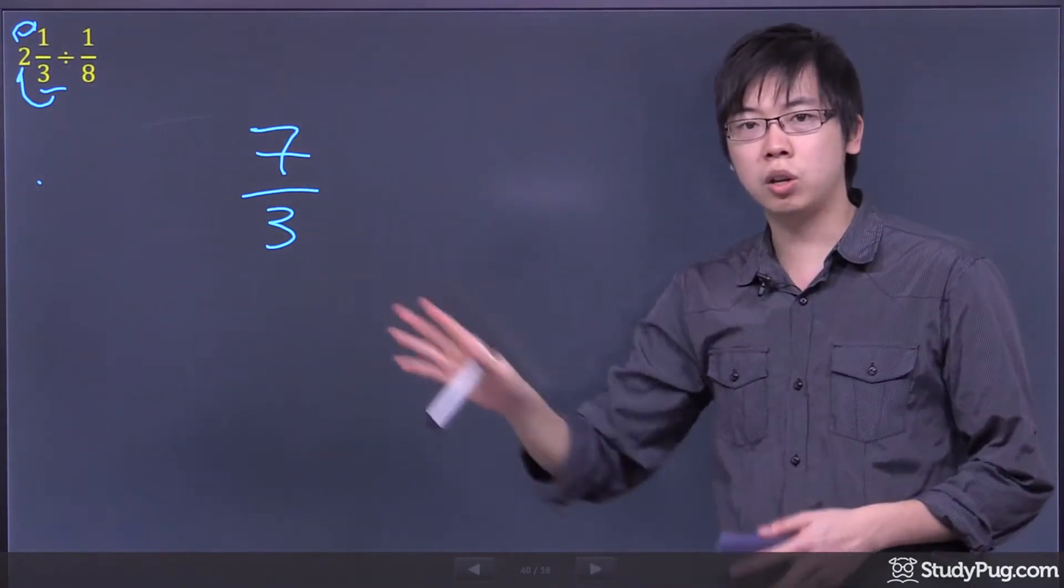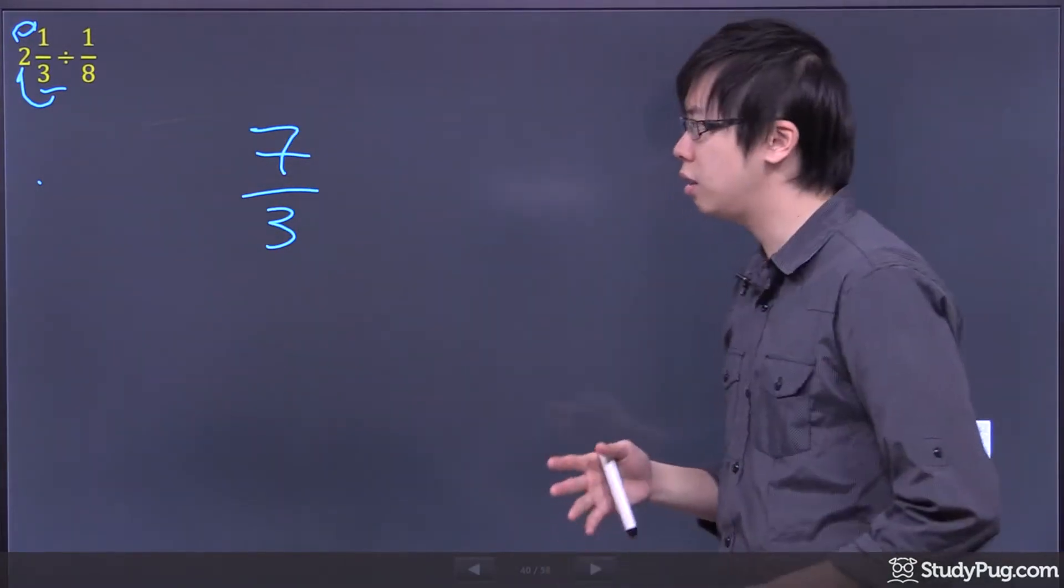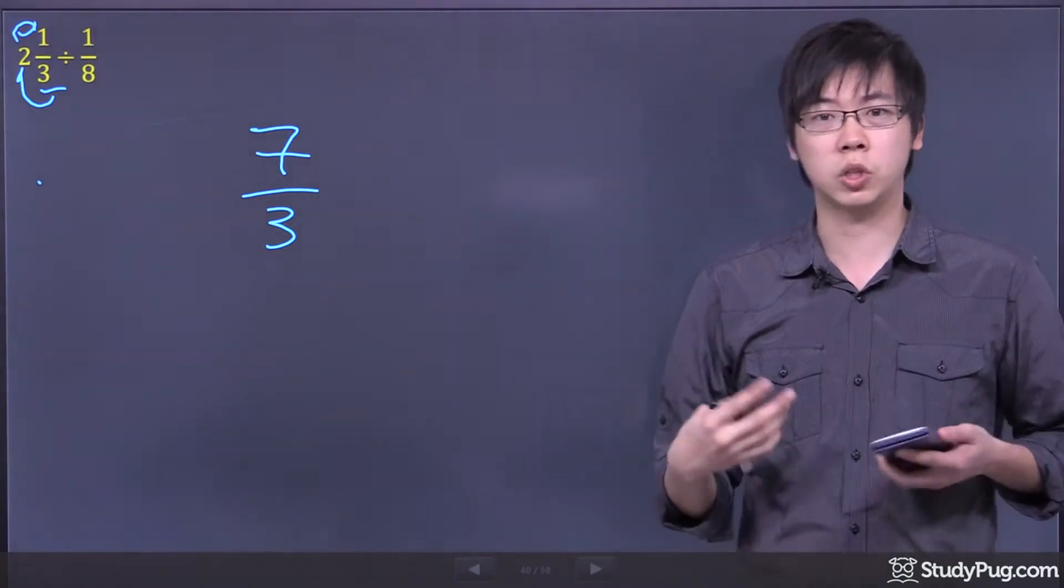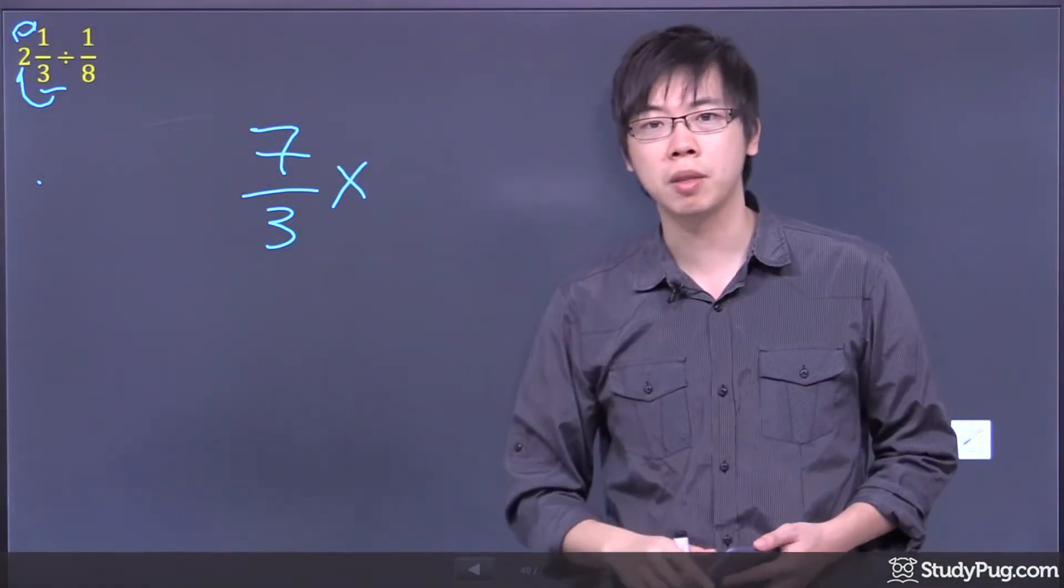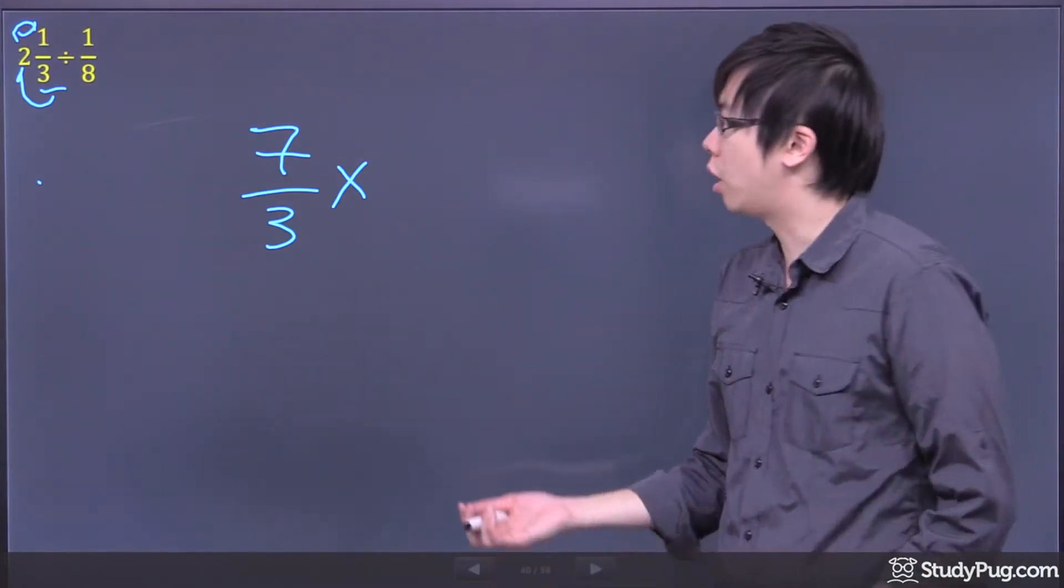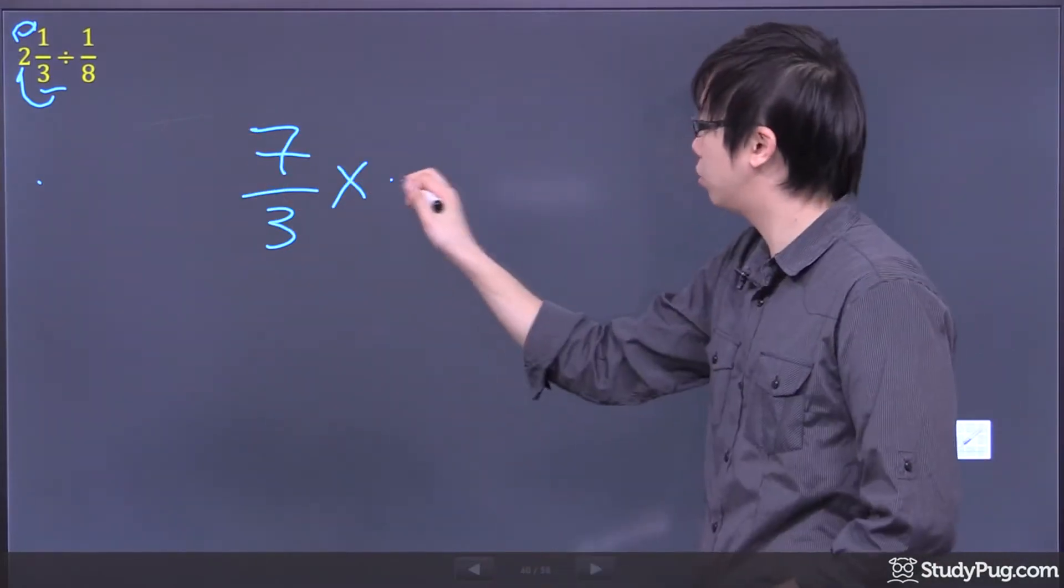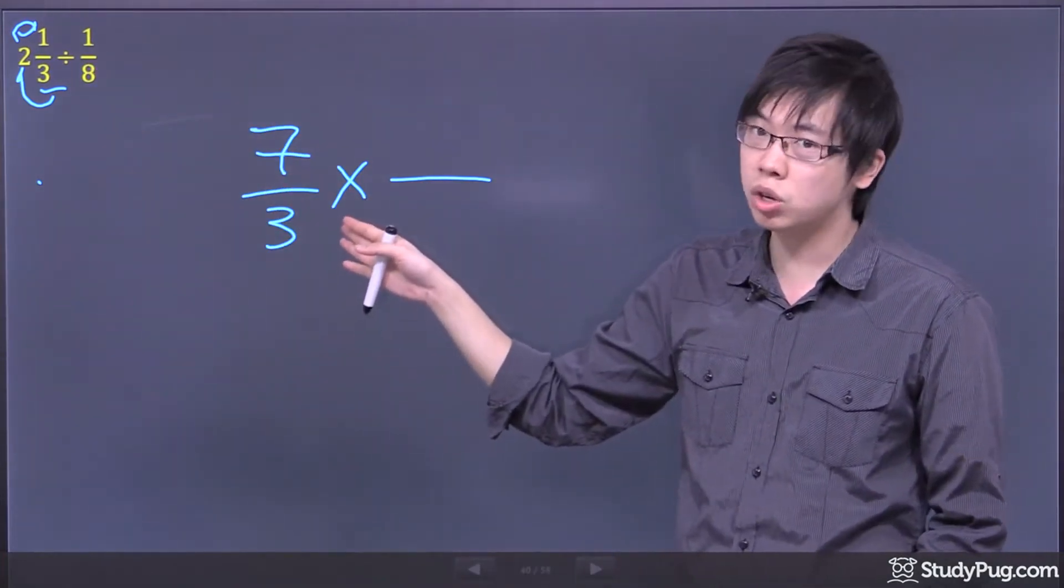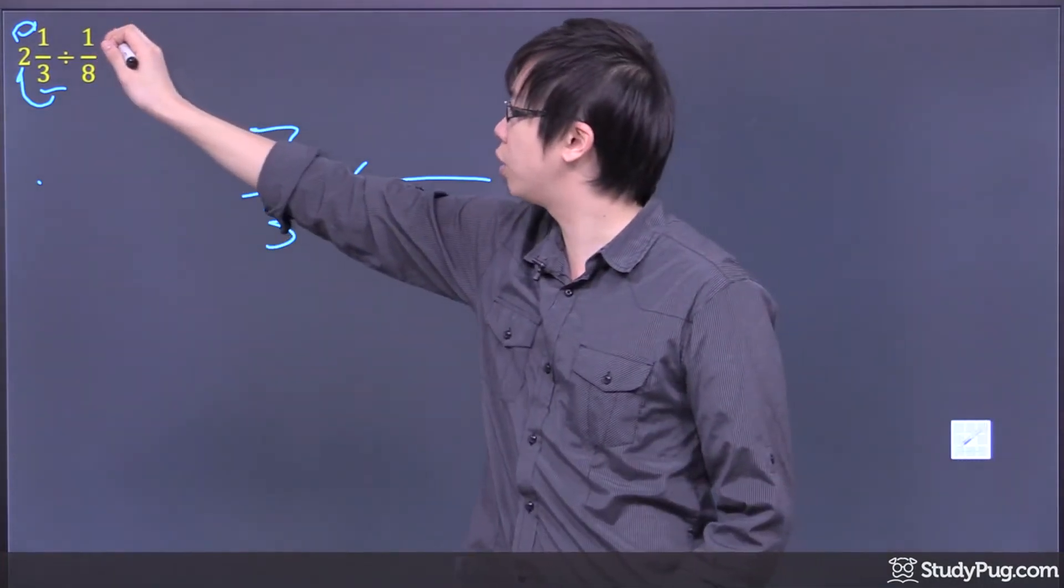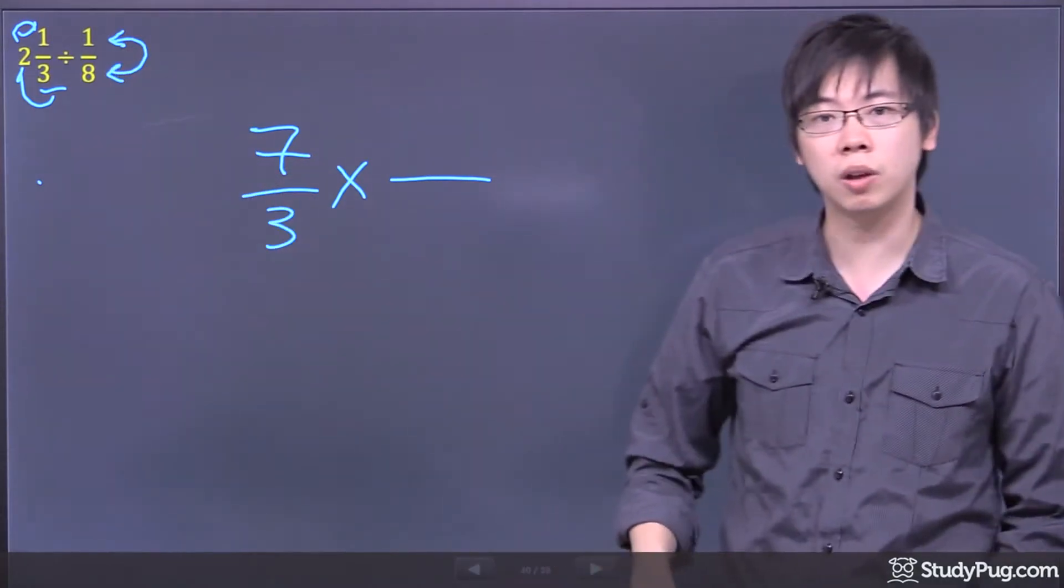Now for the next part, you don't want to divide. Dividing in our head, for our brain, is just not easy to do. So what we're going to do is just call it multiplying. But how can you just change it? Well, we can, because if you're going to change it to multiplication, you just have to flip the one with the eight.